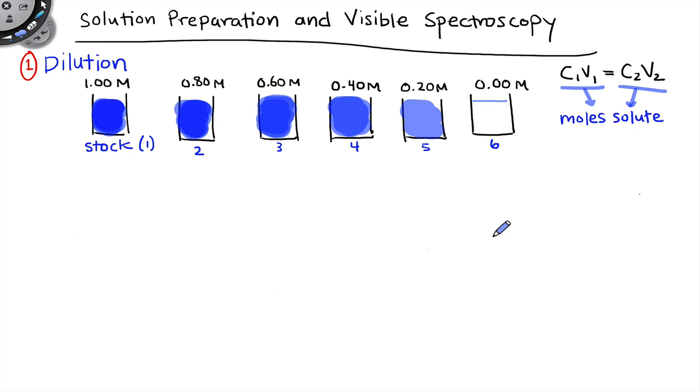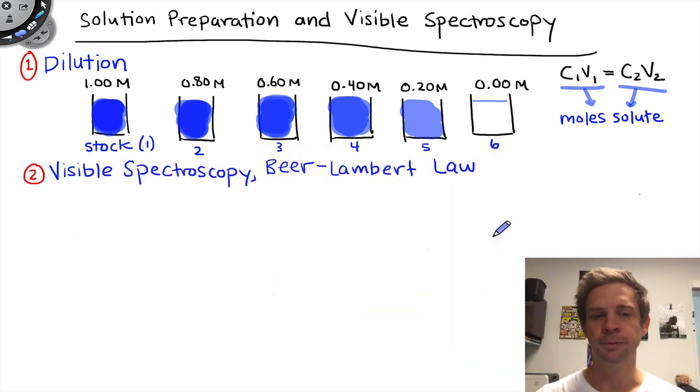Now, we have a series of copper solutions with precisely and accurately known concentrations of copper 2-ion, and we can move on to the spectroscopy of these solutions. Let's talk a little bit about spectroscopy.